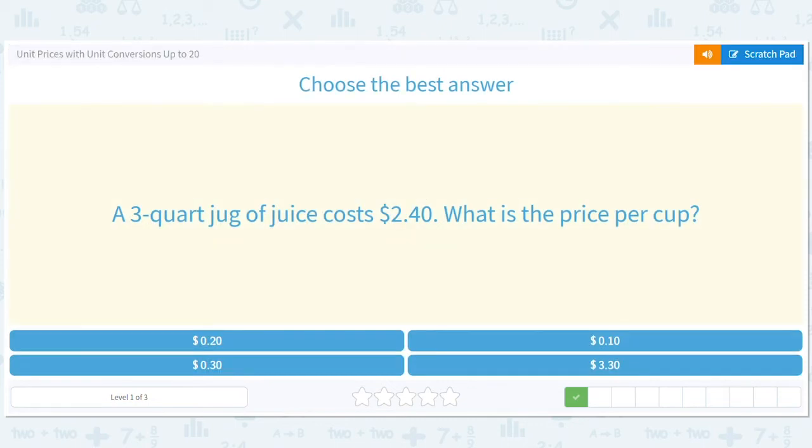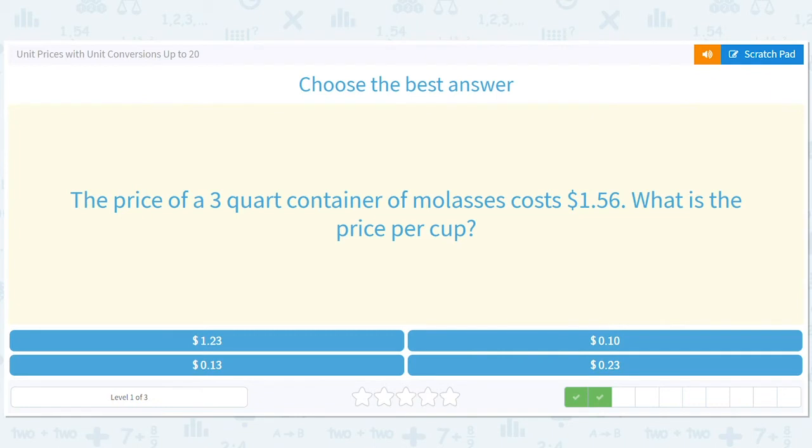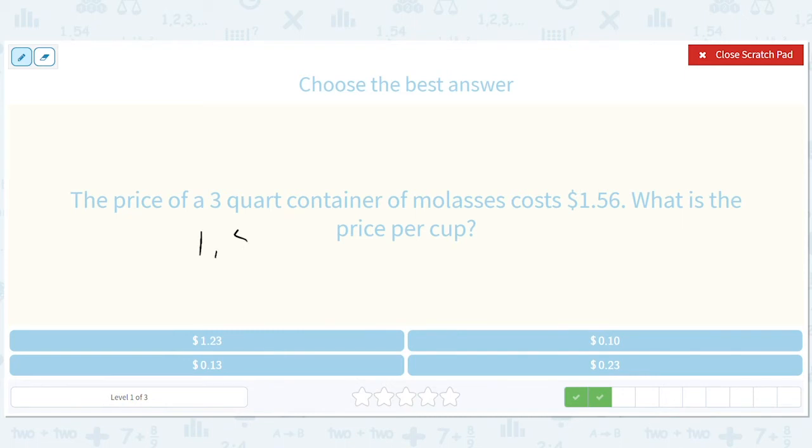The price of a three quart container of molasses costs one dollar and 56 cents. What is the price per cup? $1.56 divided by three, 50 cents times three is a dollar fifty so we need an extra two cents, so 52 cents per quart. But then how many cups are in a quart? Four, so we have to divide 52 by four. That's going to be 13. 10 cents is too small, 23 cents is too big, so it's going to be 13 cents.